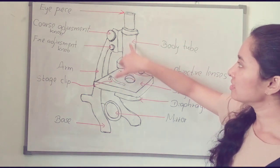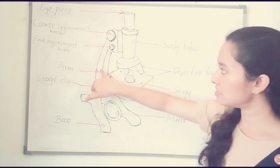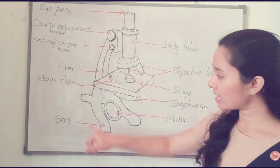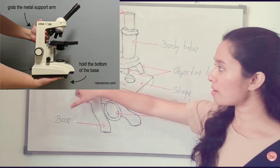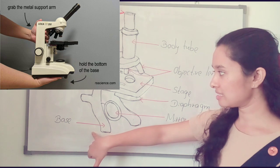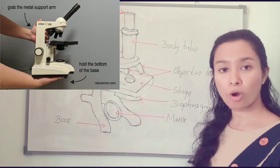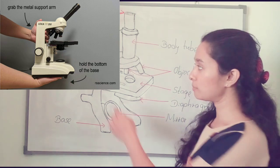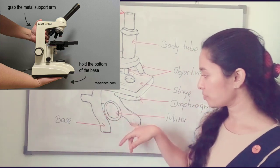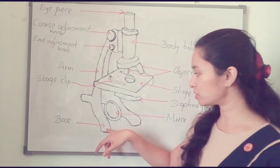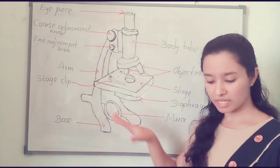Next is the body tube, the arm, and the base. The arm is held to carry the microscope from one place to another. The base is held to keep the microscope on the surface steady.